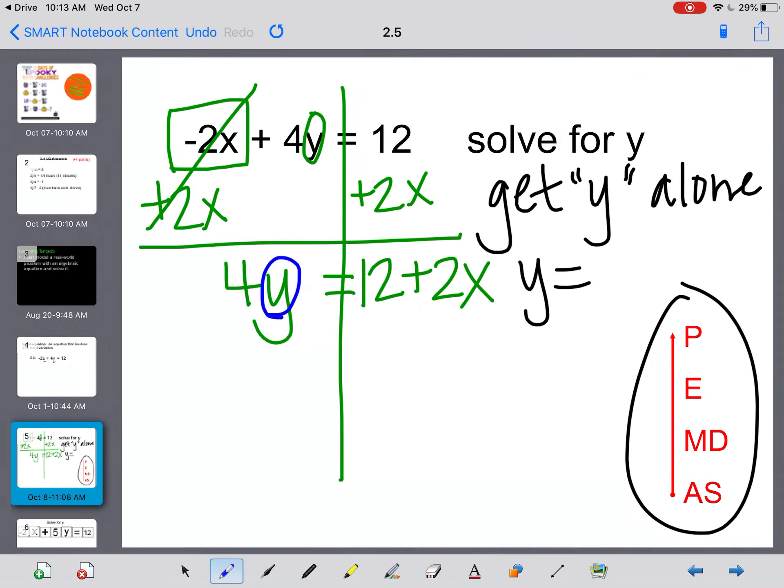Now I still have this 4 and this y together, and I only want the y. So I need to separate these two. Because 4 and y are being multiplied, we're going to do the next step. We're going to undo that multiplication with division. This is where it's a little bit different than what you've usually done. We need to divide everything by that 4. So every term on both sides is going to need to be divided by 4 to get that y by itself.